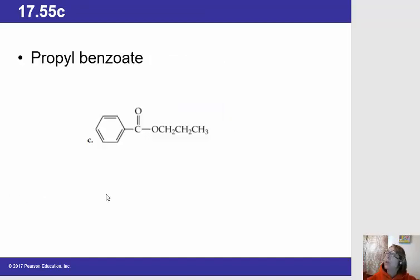And then last but not least, on the left, as it's typically drawn, we have the section of our ester that comes from the carboxylic acid. So this comes from benzoic acid. So the second part of our name will be benzoate.